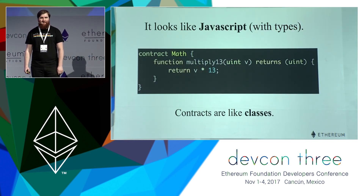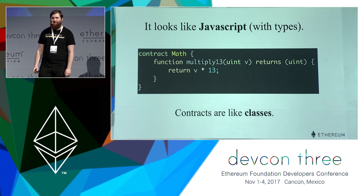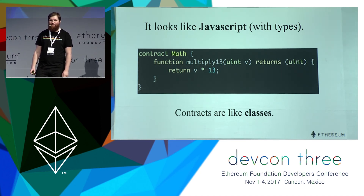Solidity looks like JavaScript, but it has types, and the contracts kind of seem like classes. It's about two years old, maybe a little more than that, and it's a very easy language to pick up because it has a lot of the qualities that web developers might be familiar with.